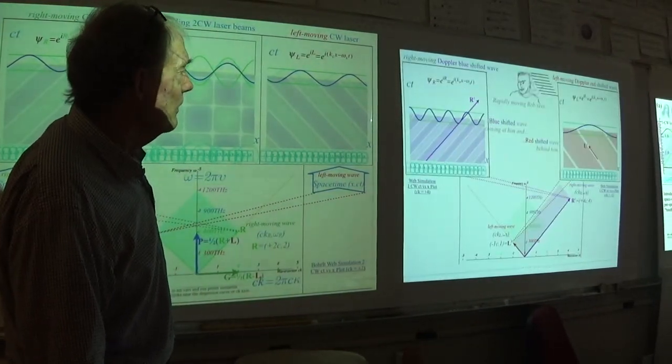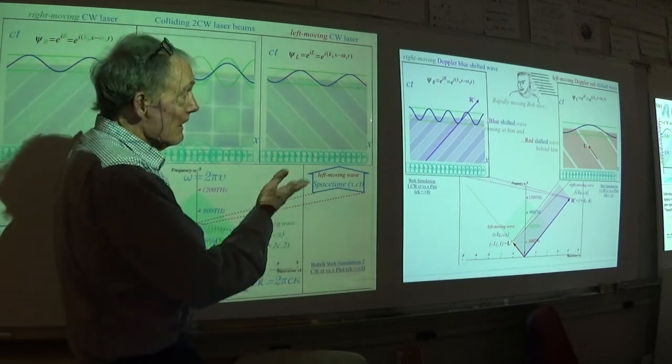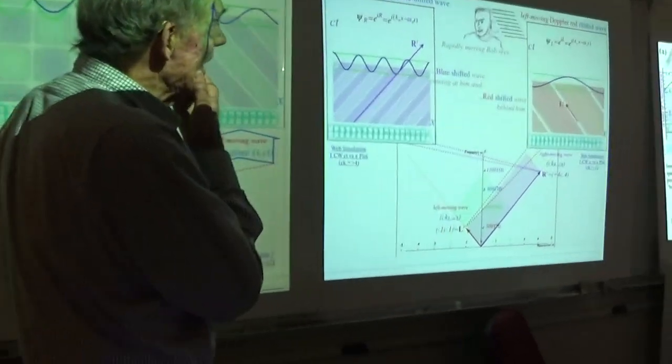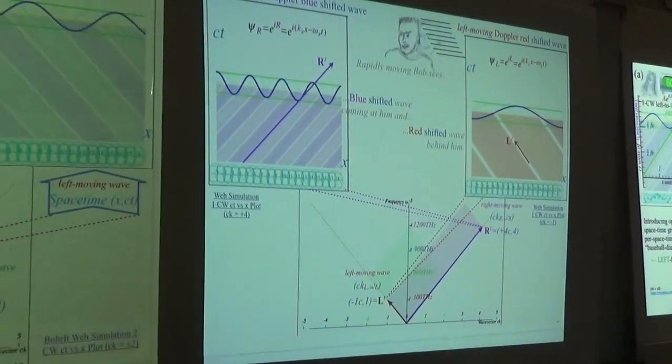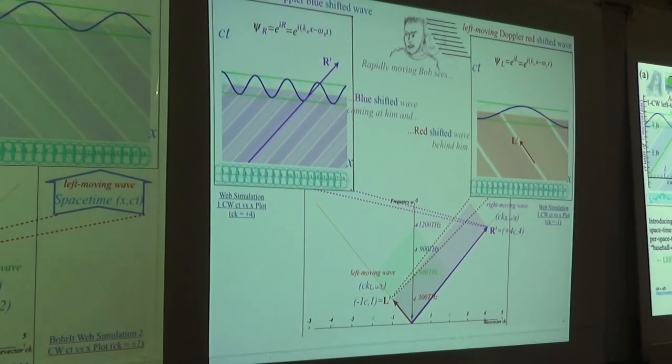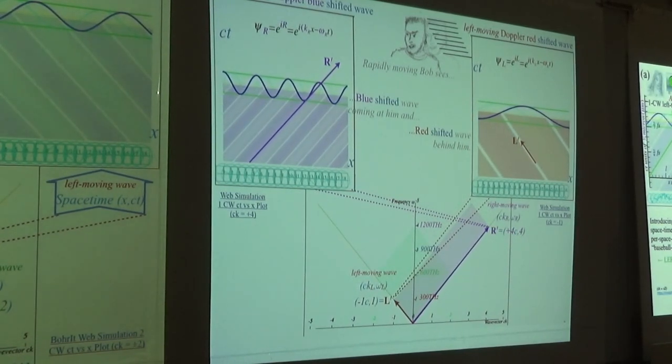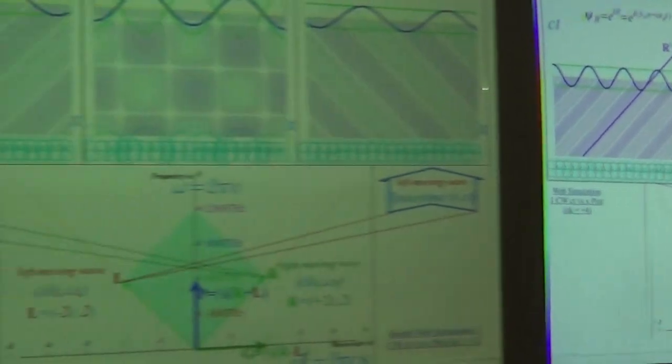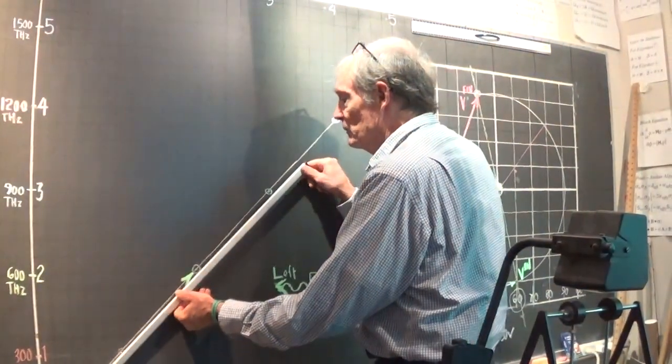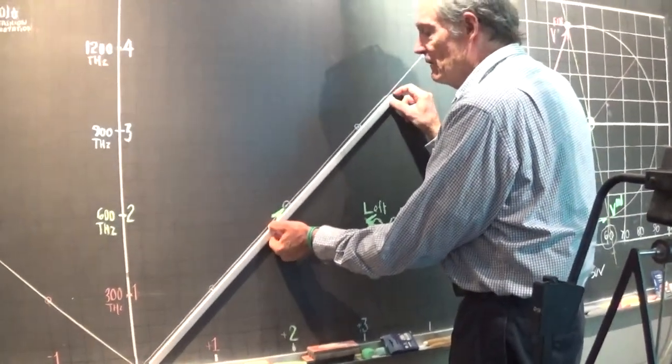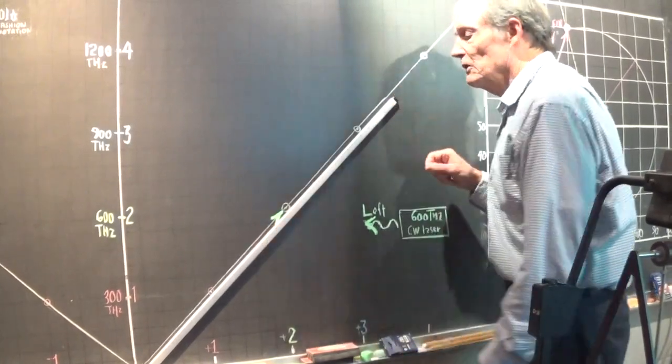Now, I'm talking about rapidly moving Bob now. So, I'm going to make Bob move so fast that he turns the 600 terahertz into 1200. So, here's where you draw your first lines on your graph. You have already a 45 degree line. Just like we had a 45 degree line that was so important in our very first graph we drew for the collisions.